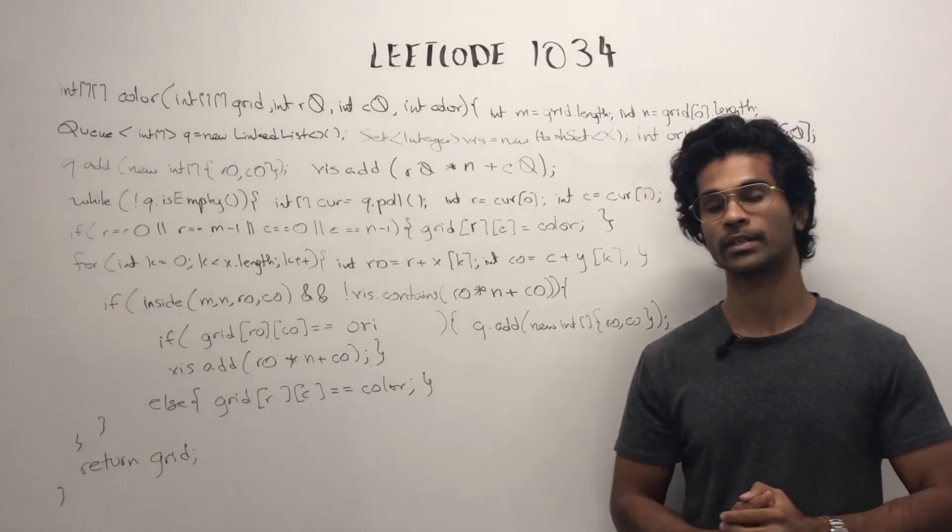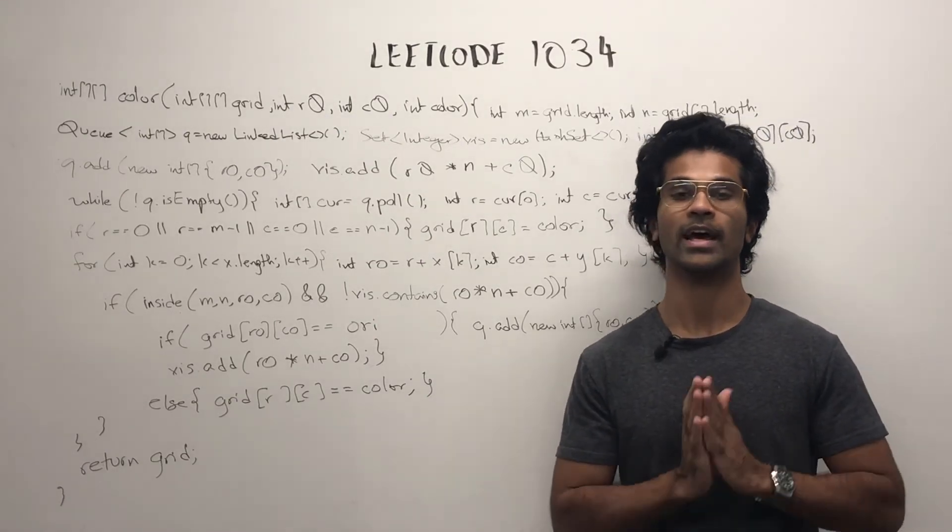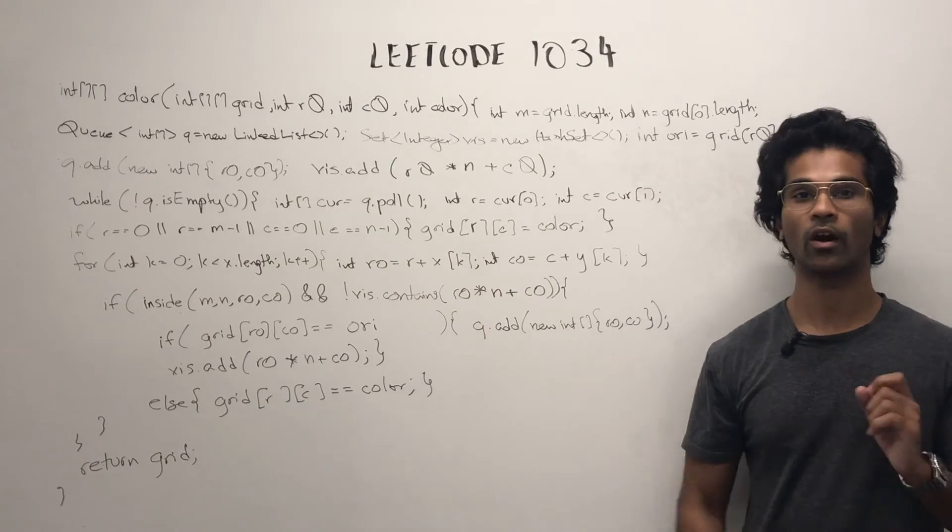Upon pulling the queue, we immediately check to see if that node is on the edge of the grid or not. If it is, we color it.